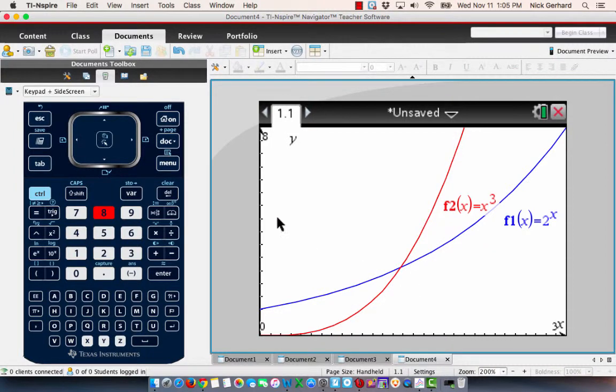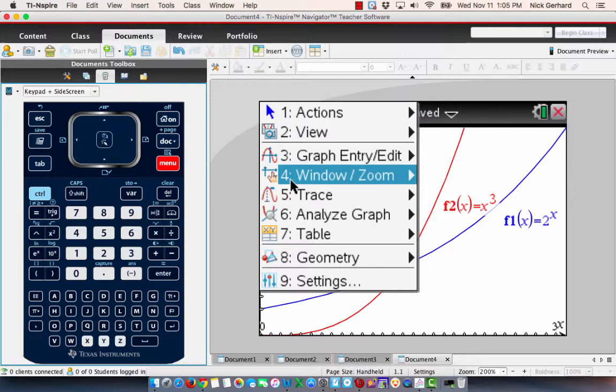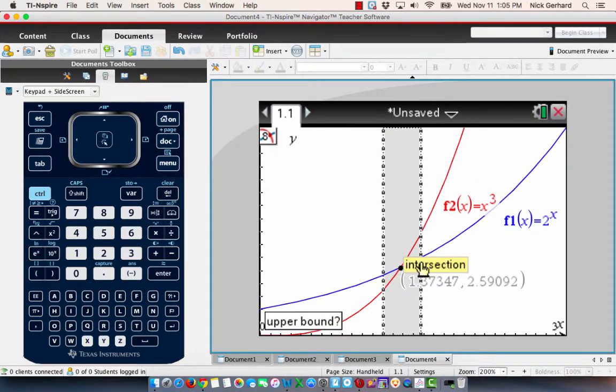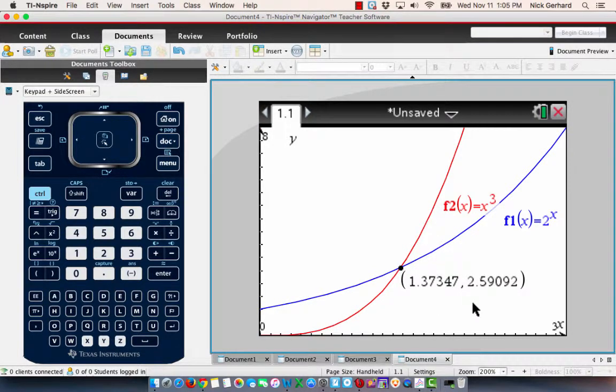So, how do we find that point? We just go ahead and we go menu, analyze graph. We want to find the intersection. I'm going to go to the left bound and the right bound. And so, when x is 1.373, 2 to the x is bigger than x cubed. So, when x is between 0 and 1.373 is the first part.